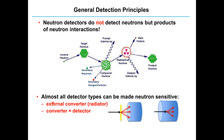Almost all detector types can be made neutron-sensitive. For that, we have to utilize external converters, that is radiators. So the setup consists of a radiator, which emits the converted radiations, and a converter — that is, the detector — where the detection principles already mentioned are applied.